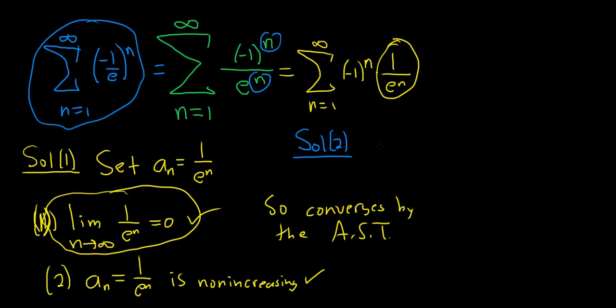How is that helpful? Well, set r equal to -1/e. Then the absolute value of r equals 1/e, which is less than one, because e is like 2.78 or something. So our series converges by the geometric series test.